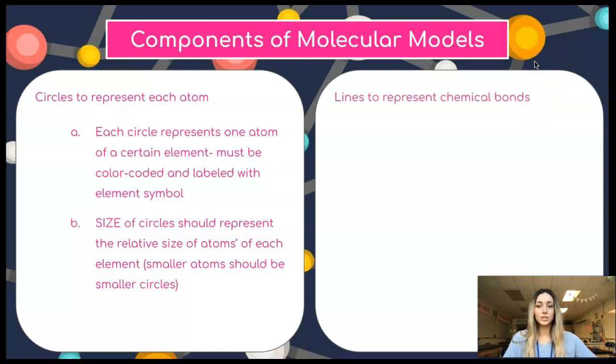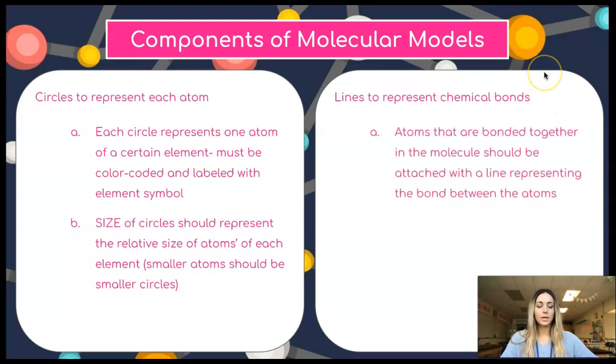In addition to the circles that represent each atom in the molecule, we also have lines to represent the chemical bonds which hold the molecule together. The atoms that are bonded together in the molecule should be attached with lines to represent the bond that holds that set of atoms together.